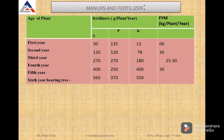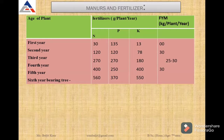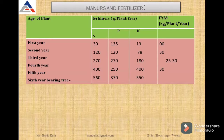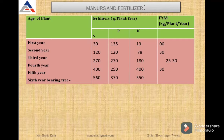The manures and fertilizers that should be added to a citrus plant are nitrogen, phosphorus, and potassium. In the first year, 30 grams of nitrogen, 135 grams of phosphorus, and 13 grams of potassium are required for a one-year-old plant. The dose is increased in the second, third, and fourth years. In the sixth year, which is a fully bearing tree, the fertilizer requirement is highest.